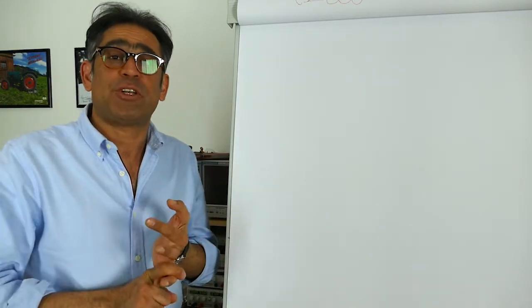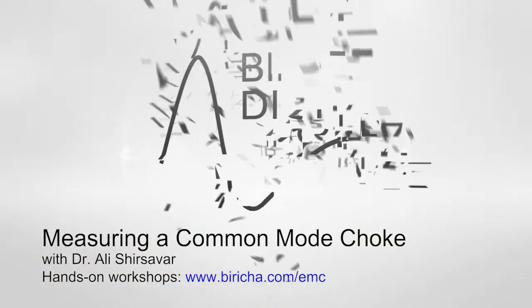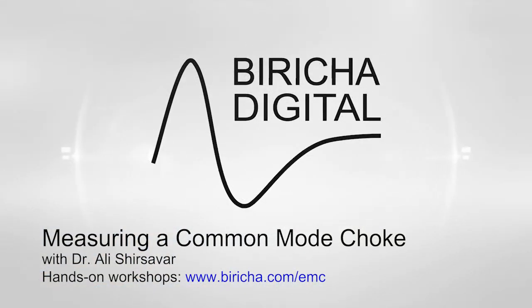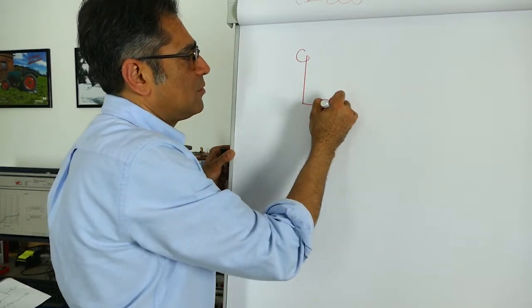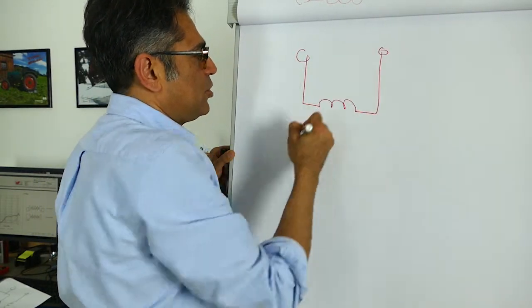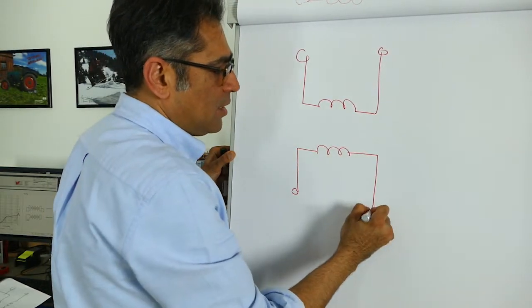We know that the common-mode choke has got common-mode inductance and differential-mode inductance, and we're going to measure both of them. So if you imagine you have got a common-mode choke which looks like so.